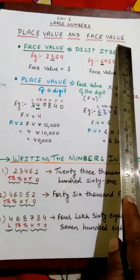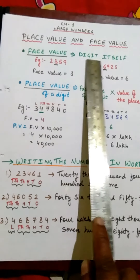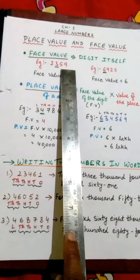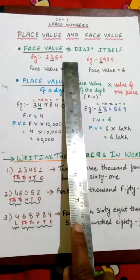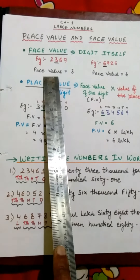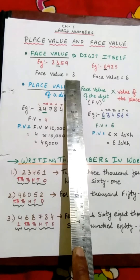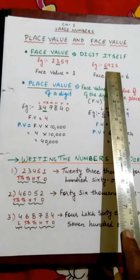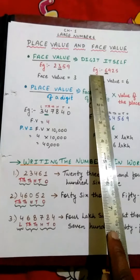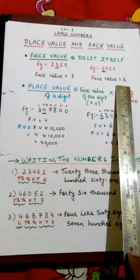Now we will study about place value and face value. First, we will study about face value. Face value is nothing but the digit itself. For example, the number is 2359 and the underline is on 3, so you have to find the face value of 3. The face value of 3 will be the digit itself — that means the face value of 3 is 3. Another example: 6925 — the face value of 6 is 6 itself. The face value of any digit is the digit itself.